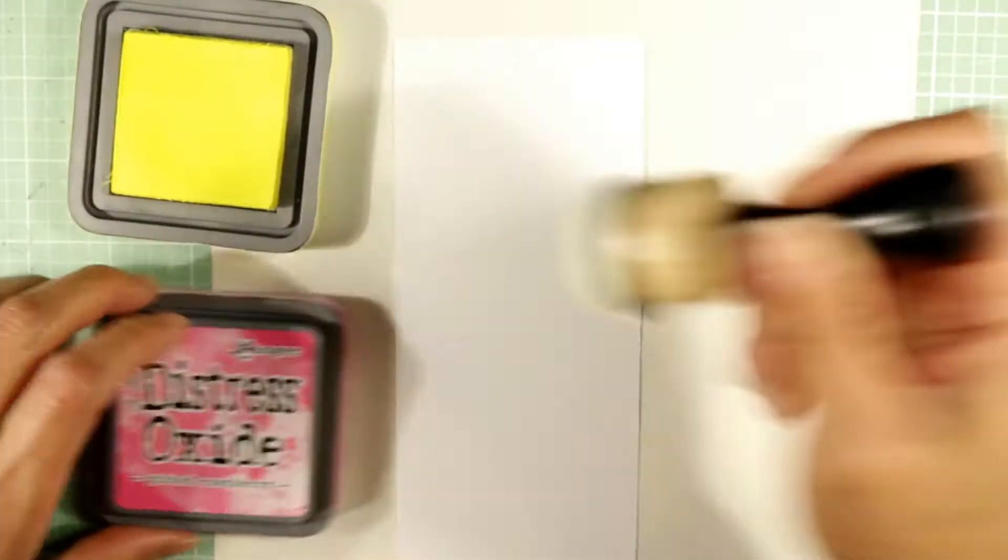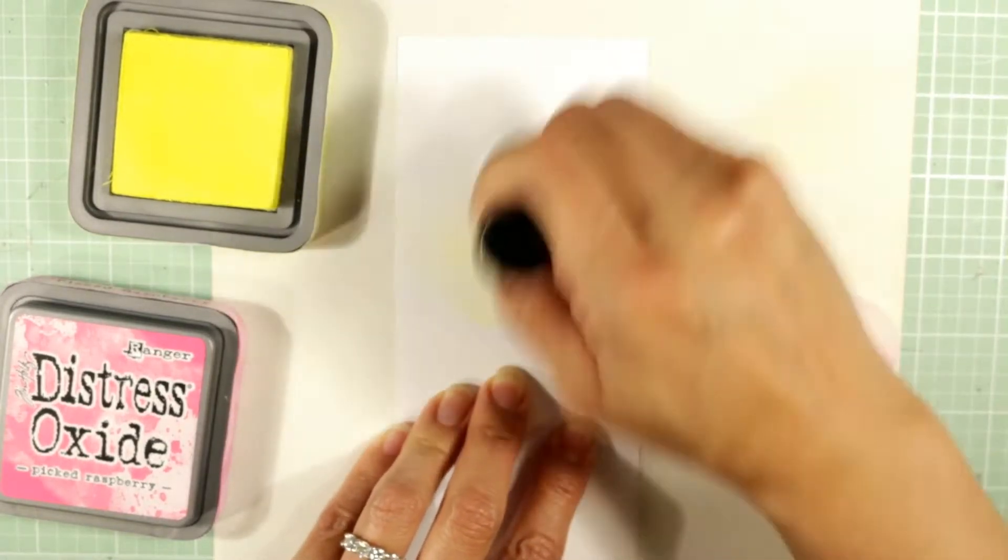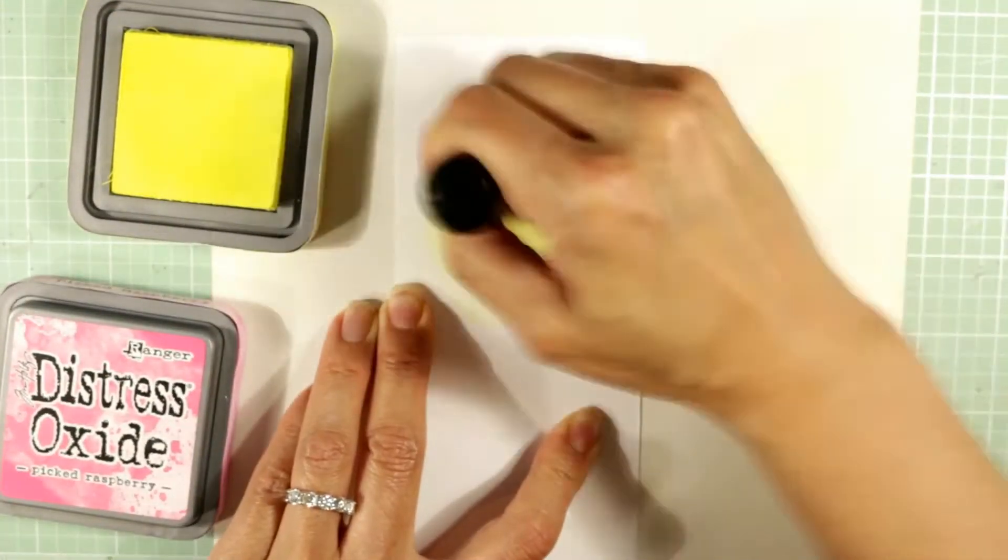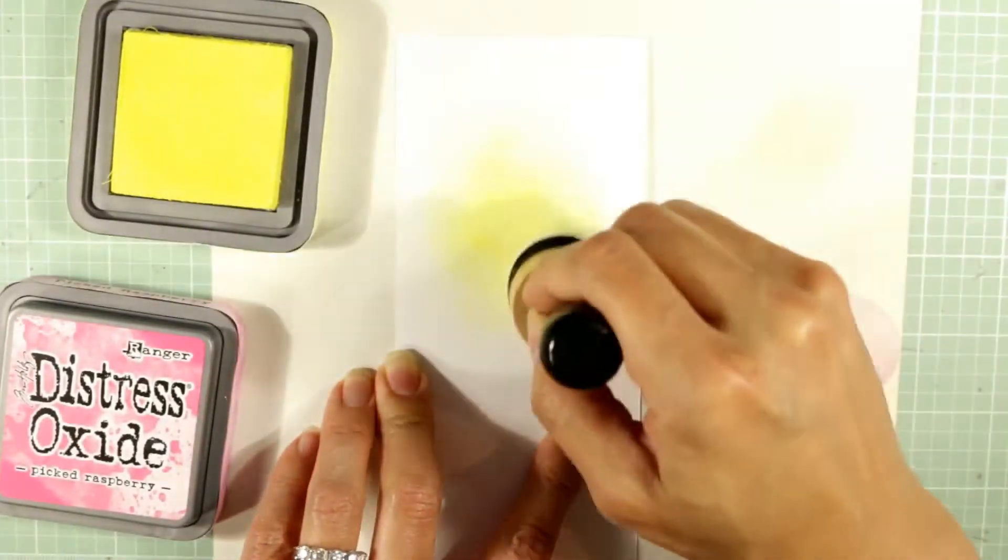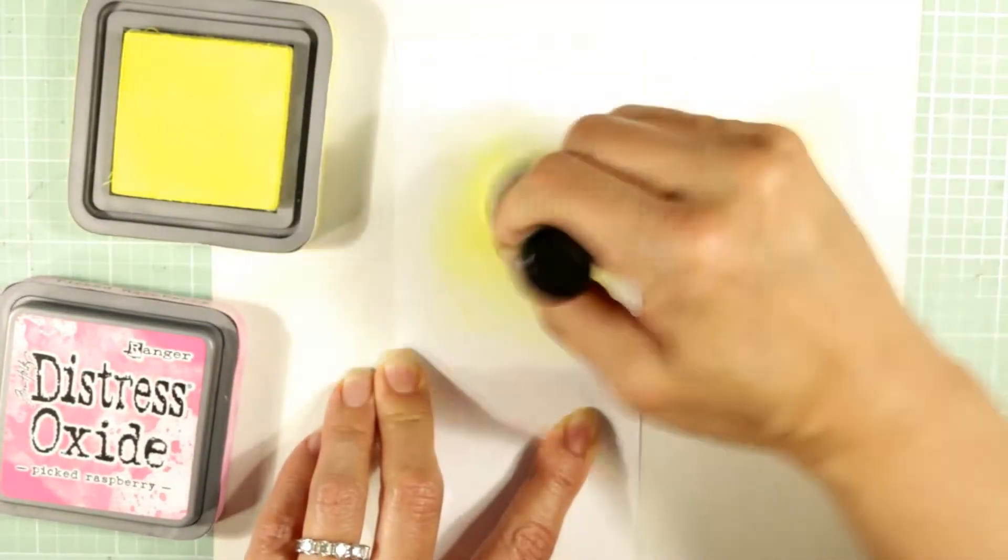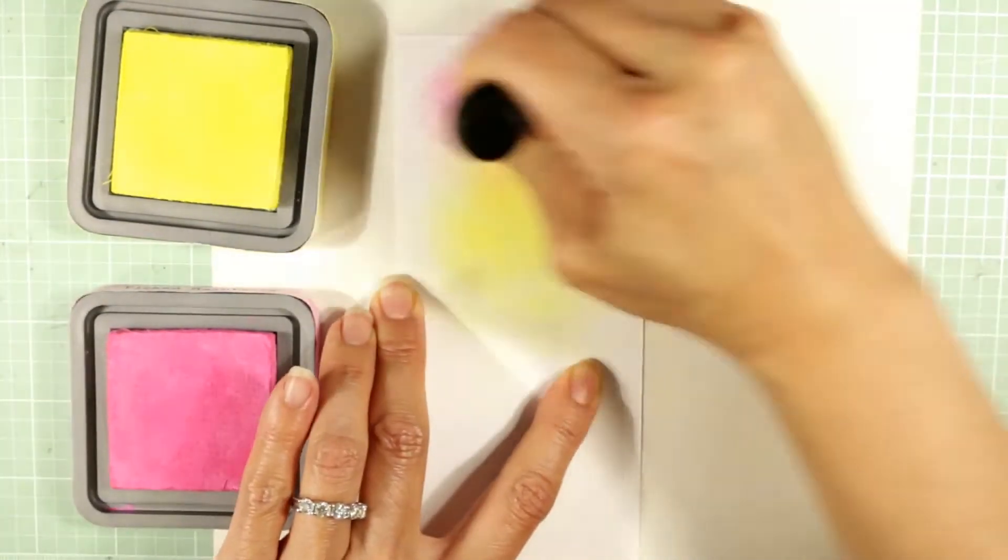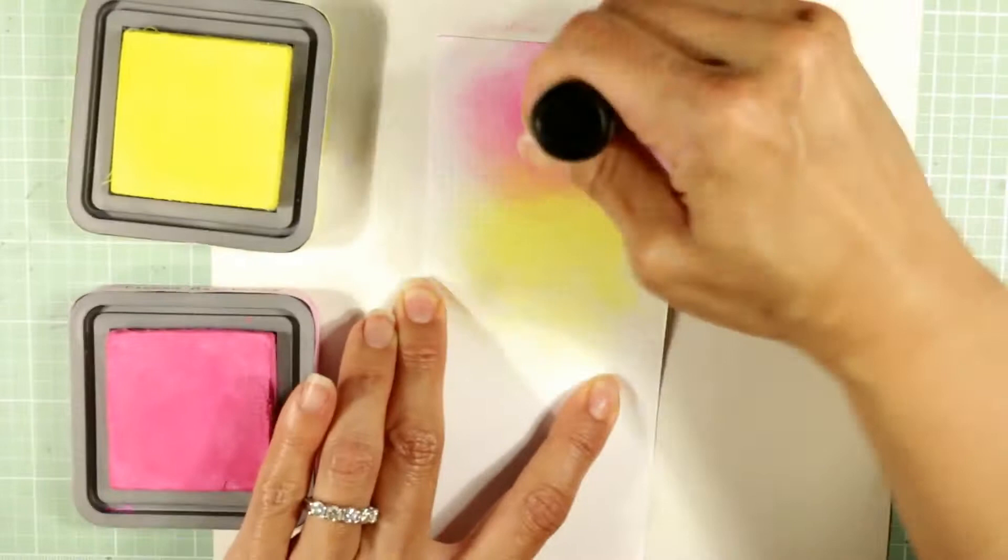So I'm starting just with a scrap of cardstock, and I'm blending on some Tim Holtz Distress Oxide inks in squeezed lemonade and picked raspberry. I'm just doing a little background sheet, so I'm not taking too much care other than I wanted a soft blend.